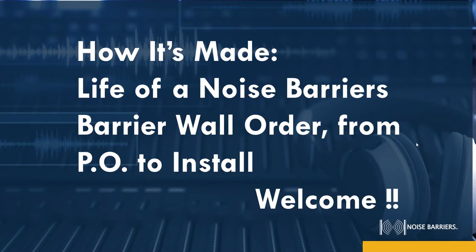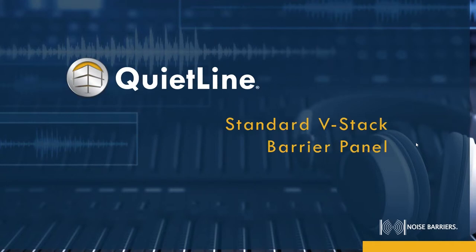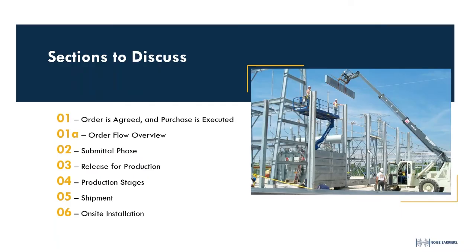Without further ado, let's get started. As you may or may not know, our barrier wall product line is called Quiet Line. Today we're going to be talking about our standard V-Stack barrier wall system. We do have quite a few different barrier wall systems — the V-Stack, the SL, the SLR, and a Concealer — but for simplicity today we're going to stick with our bread-and-butter V-Stack barrier panel. It's important to note that our typical webinars are about products like sliding doors or bi-folding doors, but today we're going to talk more about a process, an order flow, and how it affects Noise Barriers and our customers from internal to external.